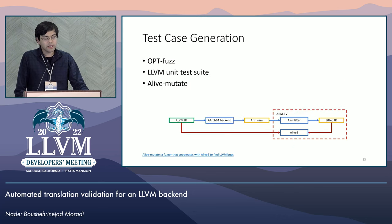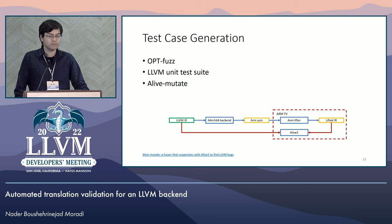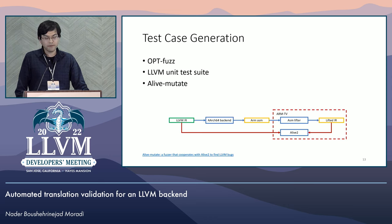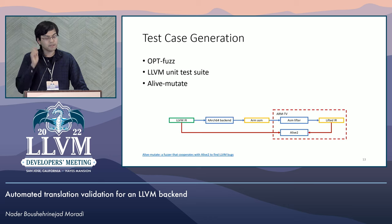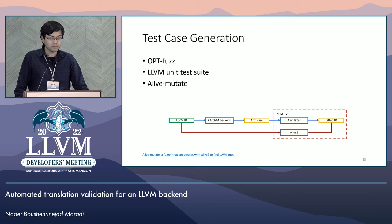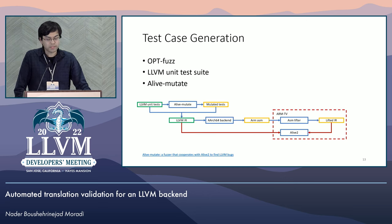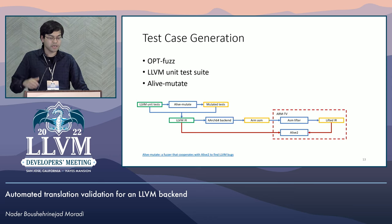With ARM TV, we have access to a test oracle that checks for refinement between the source IR and the emitted backend code. However, to find bugs, we need a suite of test cases to complete the fuzzing loop. During early development, we used UpFuzz, a simple LLVM generator, and the LLVM unit test suite. These were not very effective in finding LLVM bugs — perhaps because the generated output was too simple in the former, and in the latter, regressions are minimal for such a widely used backend. Hence, we paired ARM TV with alive-mutate, a mutation engine that my colleague Yuyo Fan has developed and already presented at the dev meeting. You can check out the talk description at the link shown.